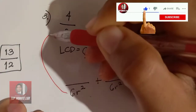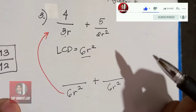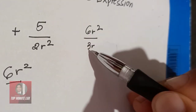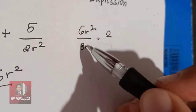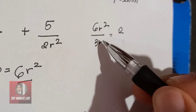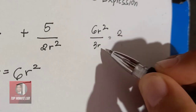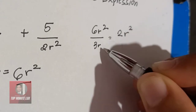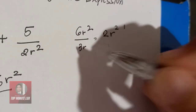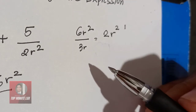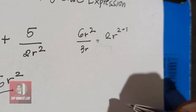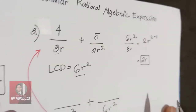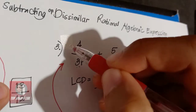Divide: 6R squared divided by 3R. Using the laws of exponents, 6 divided by 3 gives 2, and R squared divided by R gives R to the power of 2 minus 1, which is R. So the result is 2R. Then multiply by the numerator 4: 2R times 4 gives 8R.